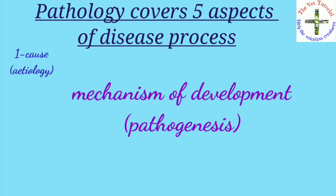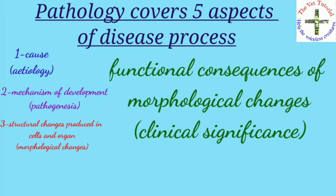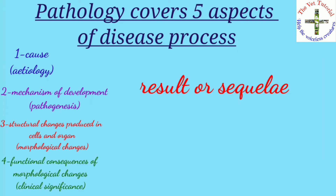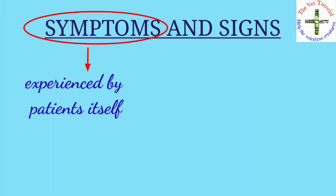Third is the structural changes produced in the cell or organ, that is morphological changes. Fourth is the functional consequences of morphological changes, that is clinical significance. Fifth is the result or sequel. Now let's see what symptoms and signs are. Symptoms are those which are experienced by the patient themselves — for example, stomach pain.